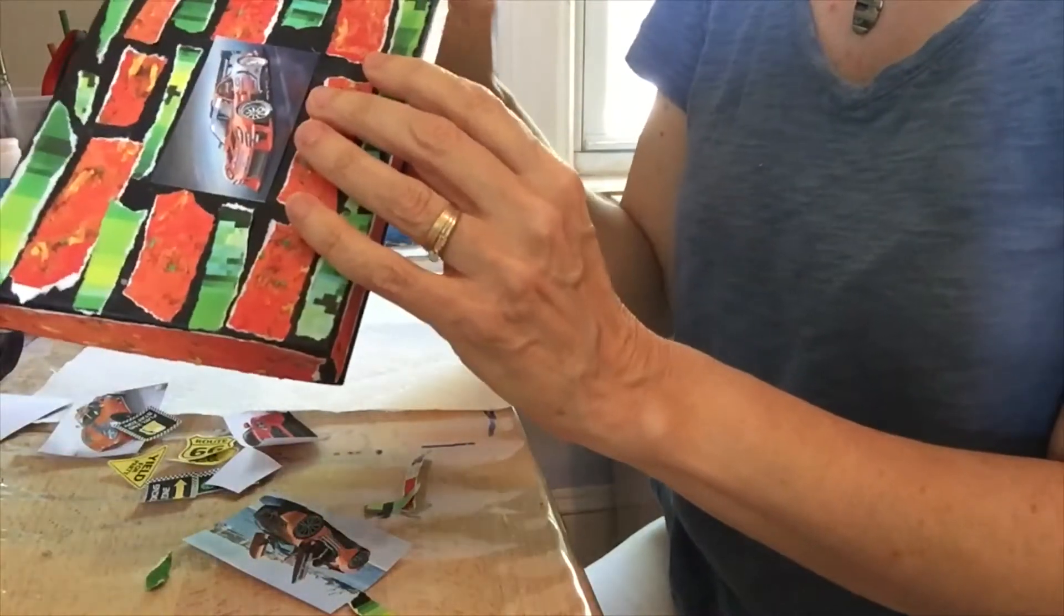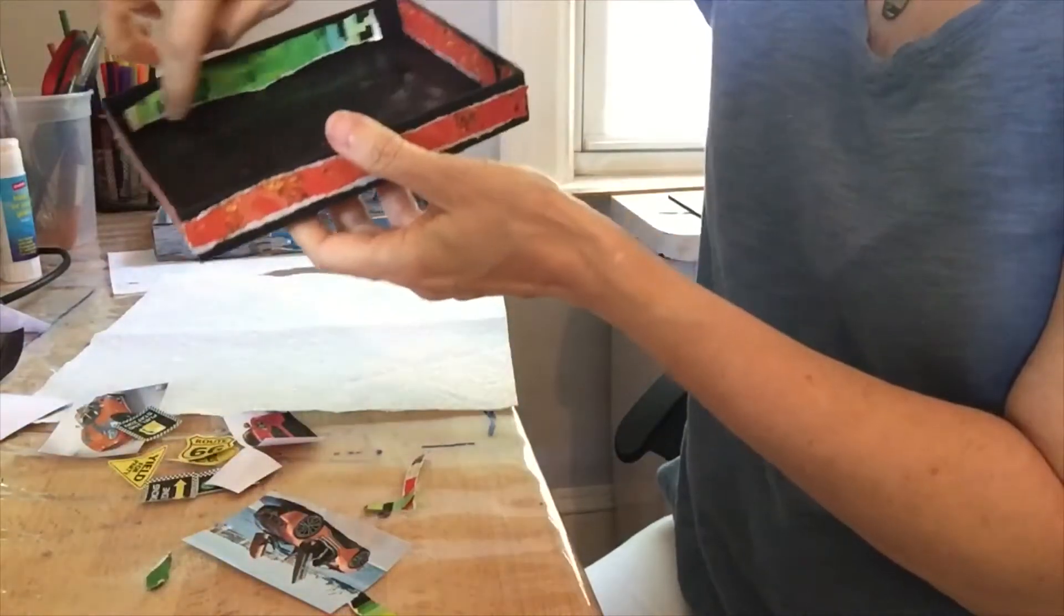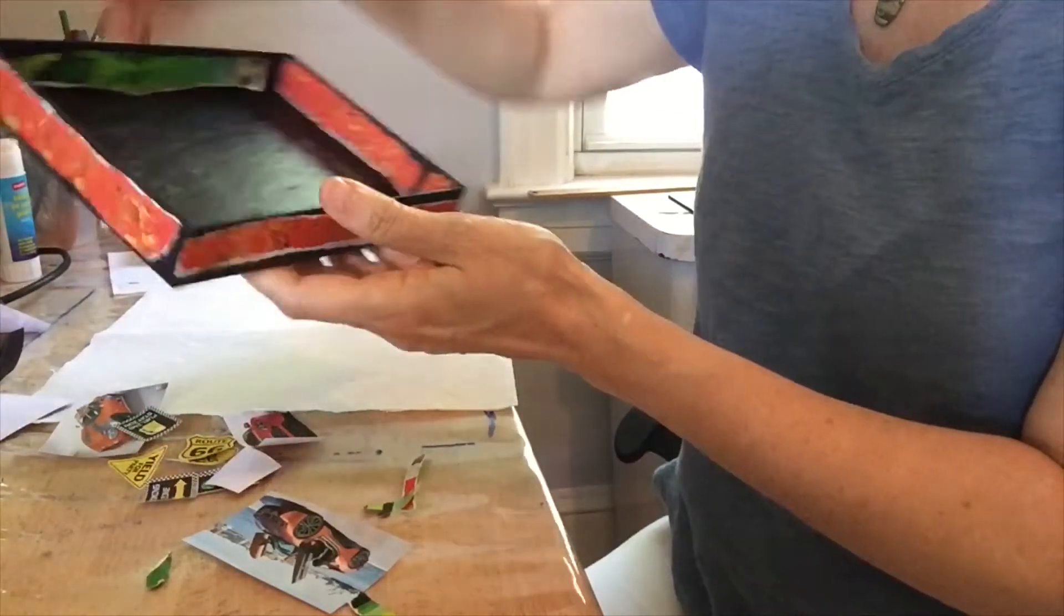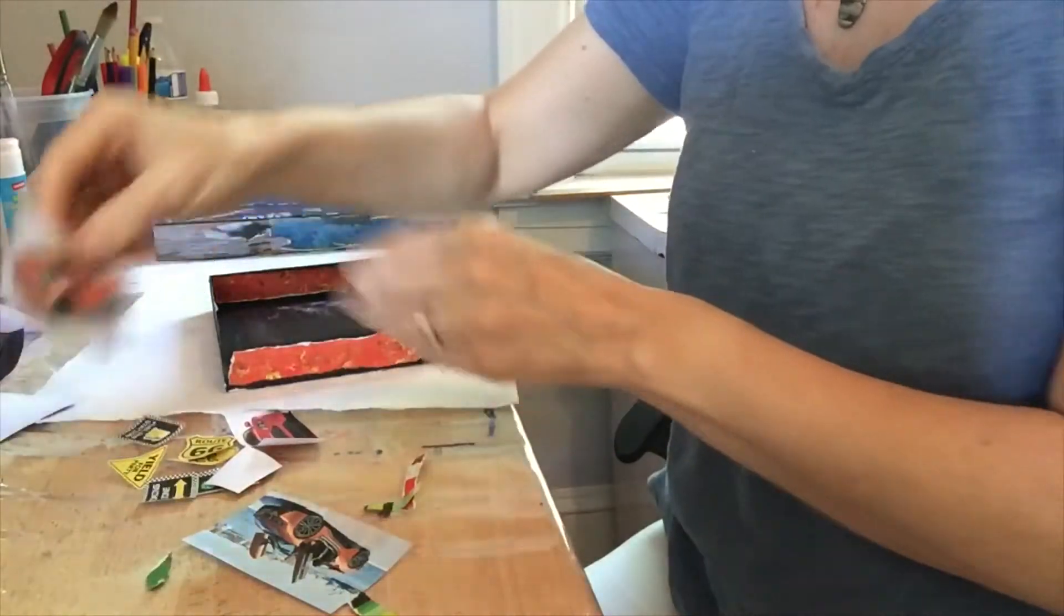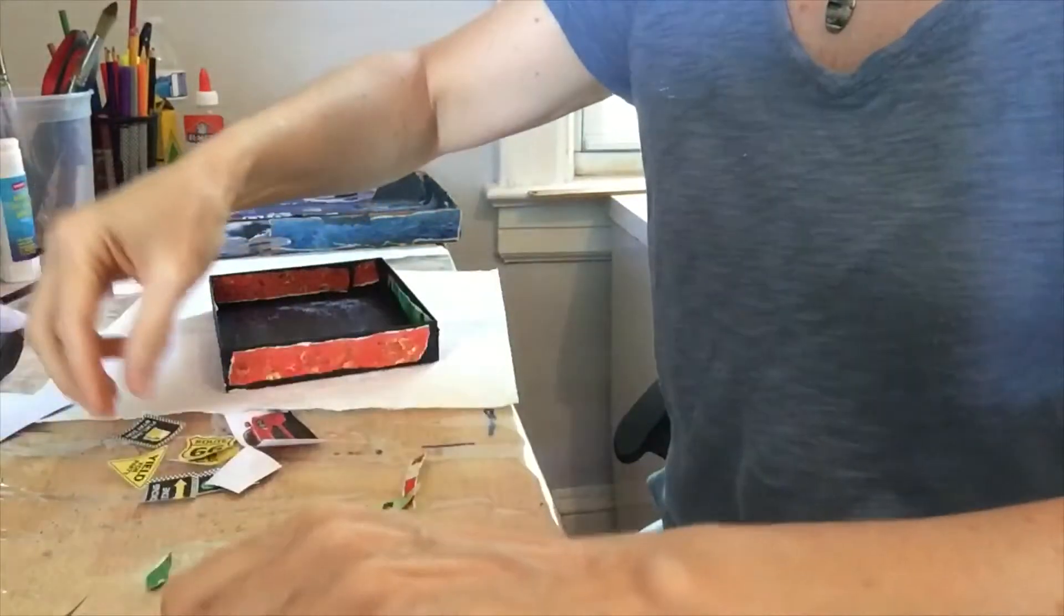This is a black box, so I wanted to keep some of the black coming through. Then I put some here on the inside, and I have all my car images that I cut out—a lot of car images.